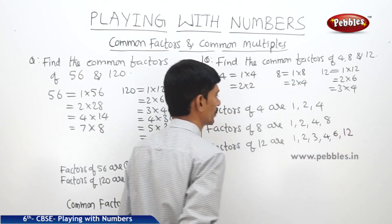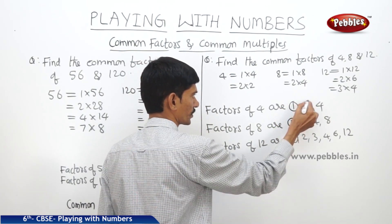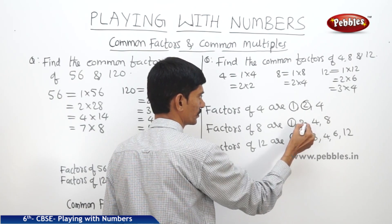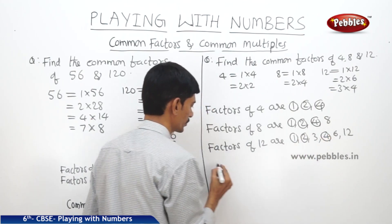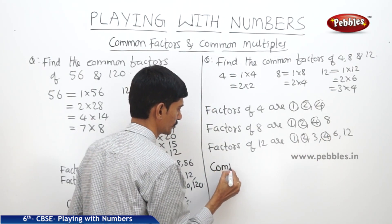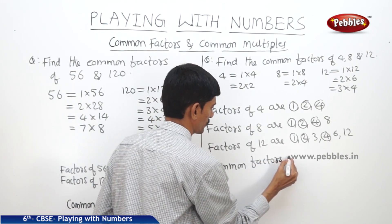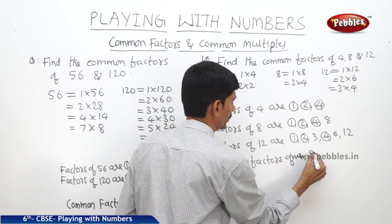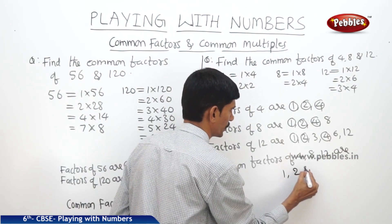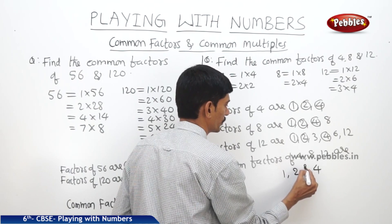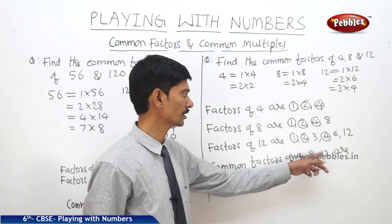The factors of 12 are 1, 2, 3, 4, 6 and 12. Now the common factors: 1 is a common factor, 2 is also a common factor, and 4 is also a common factor. So the common factors of 4, 8 and 12 are 1, 2 and 4.